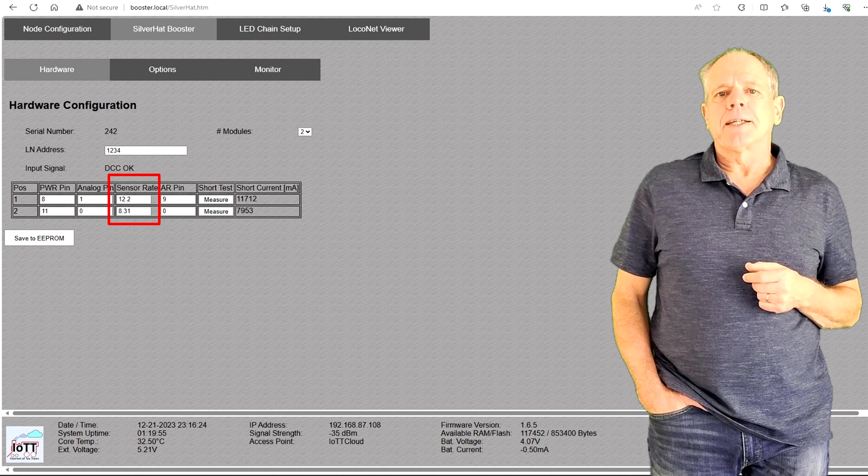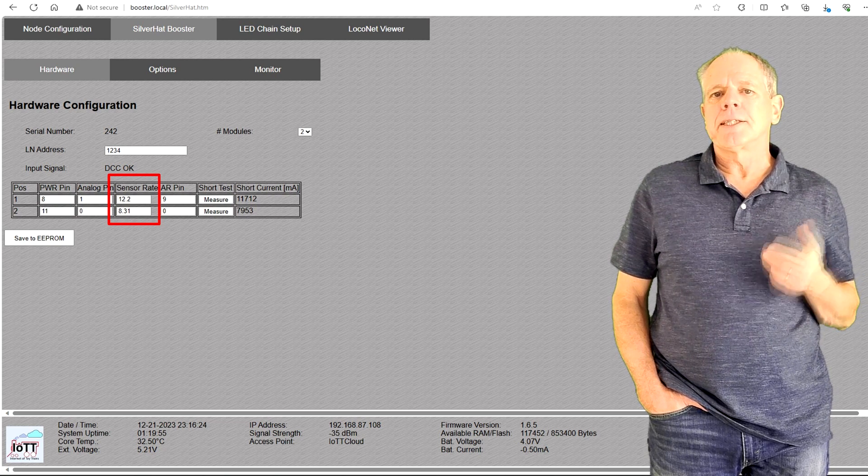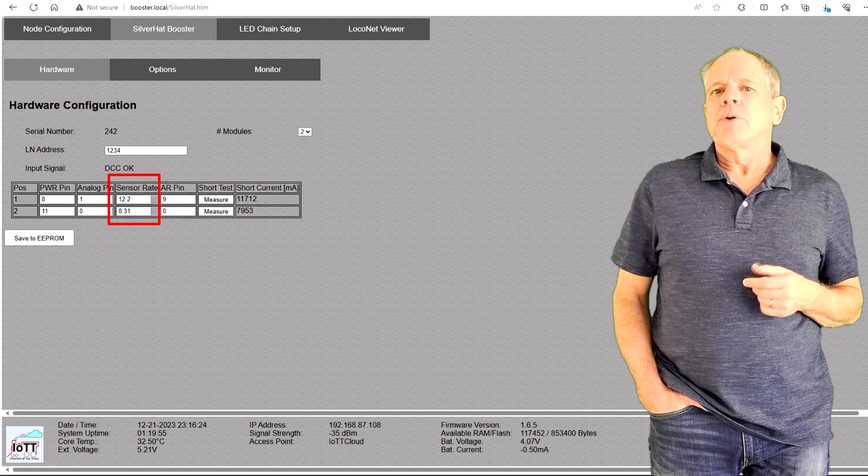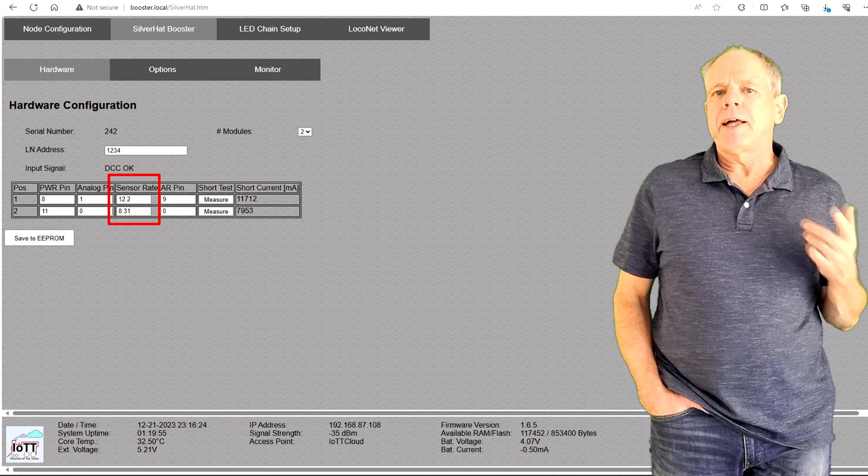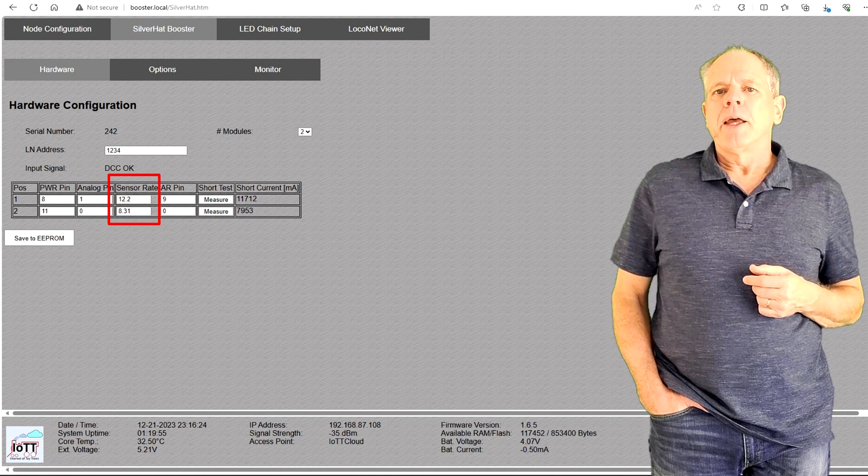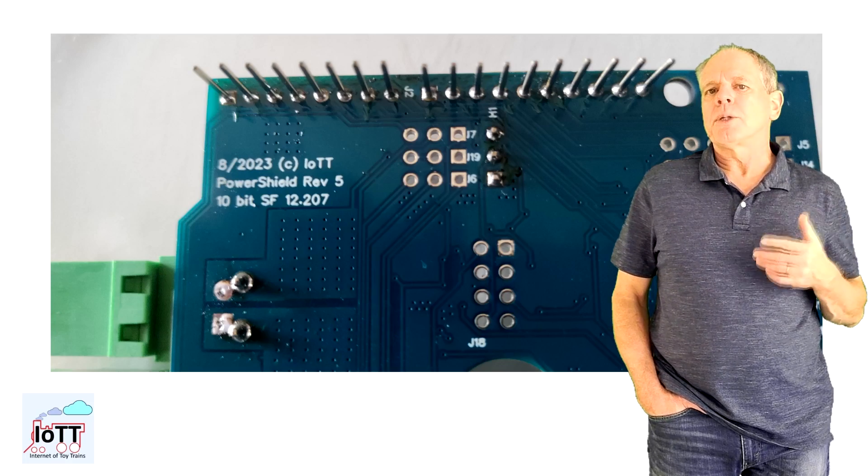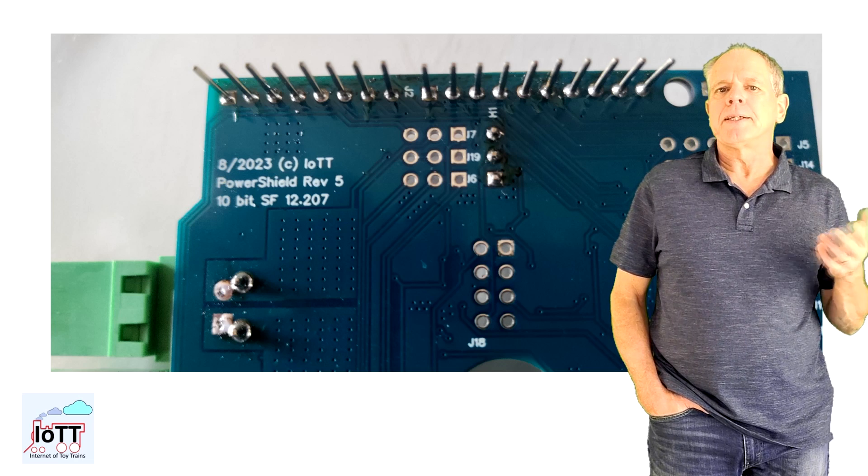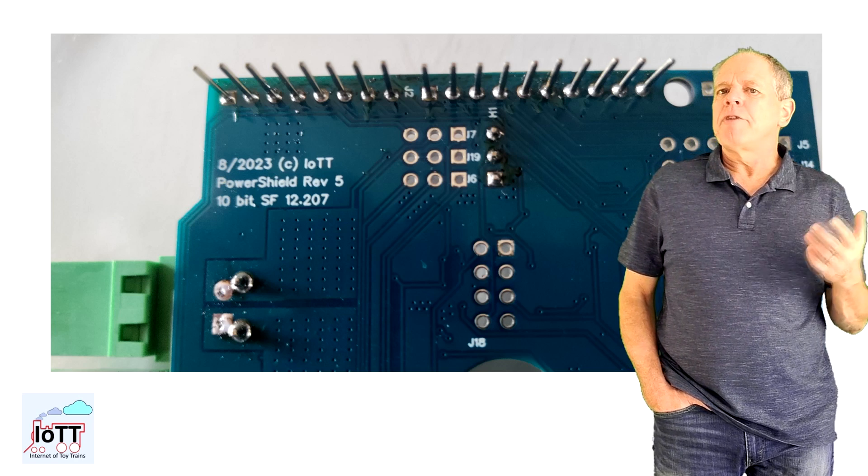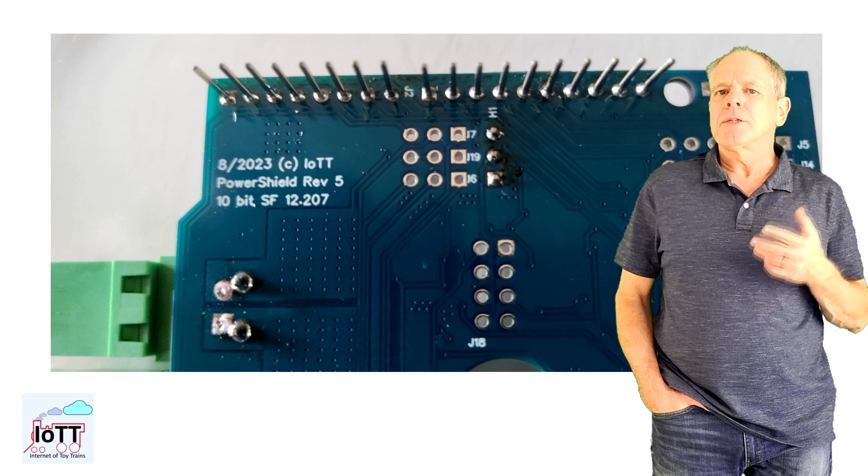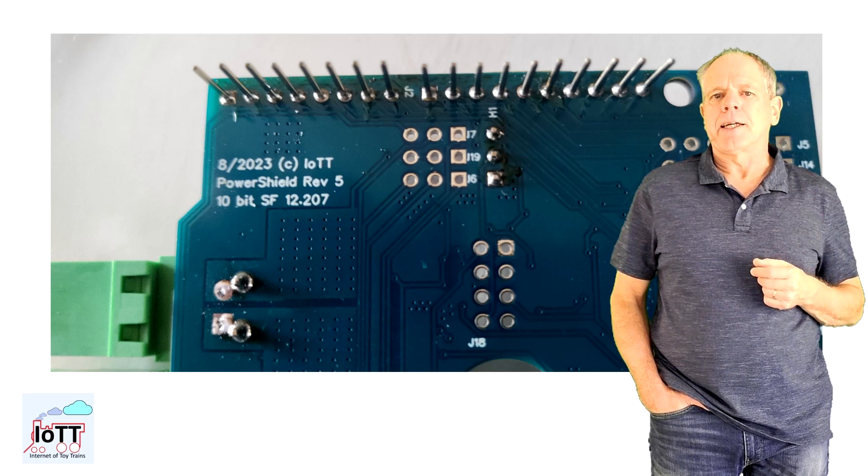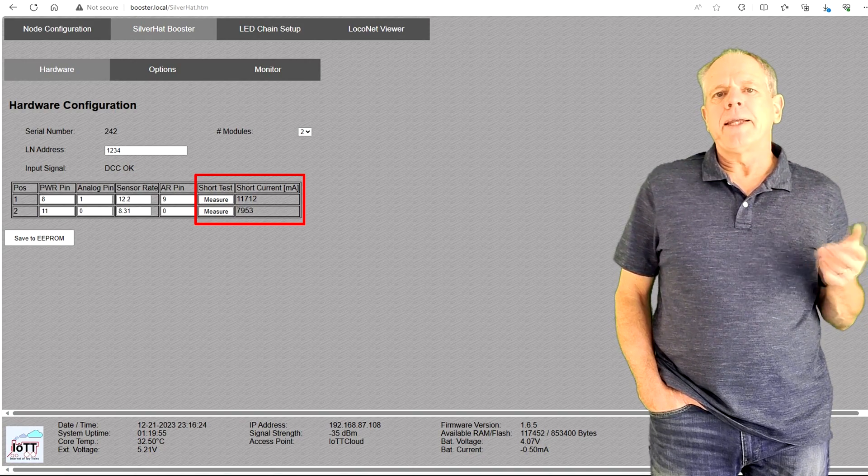Next, enter the sensor rate. For standard PowerShields, this is 8.31. For the Revision 5 PowerShield, the value is 12.2. Revision 5 and any future boards have the sensor rate value printed on the board, and it is the same value you use for the PowerShield board in a DCC-X stack.